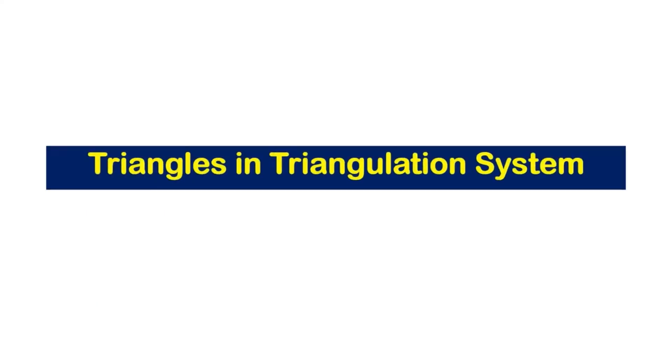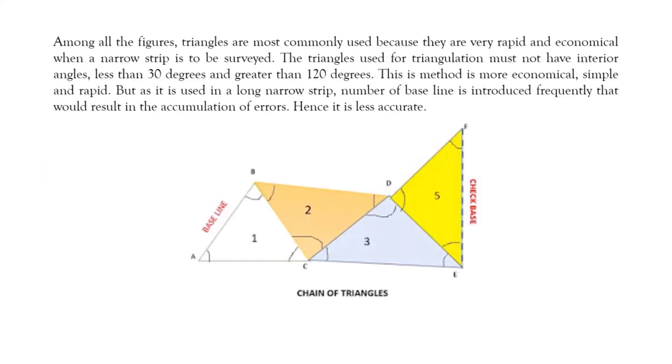1. Triangles for triangulation. Among all the figures, triangles are most commonly used because they are very rapid and economical when a narrow strip is to be surveyed. The triangles used for triangulation must not have interior angles less than 30 degrees and greater than 120 degrees. This method is more economical, simple, and rapid. But as it is used in a long narrow strip, a number of the baselines is introduced frequently which would result in the accumulation of errors. Hence it is less accurate.